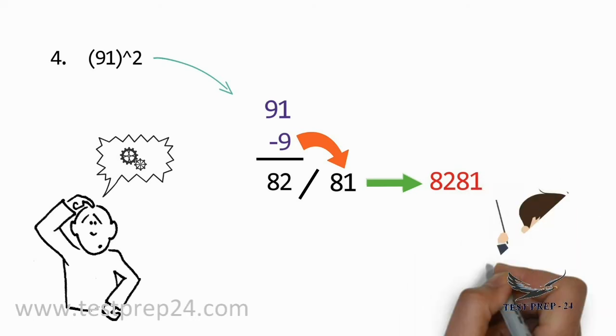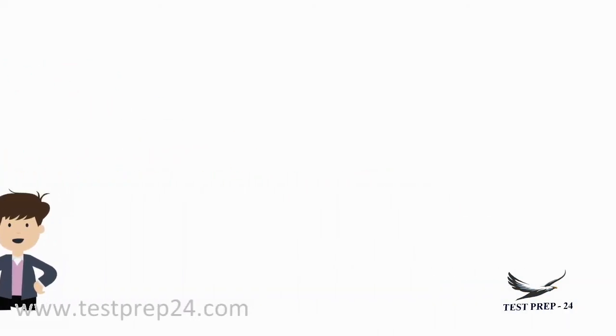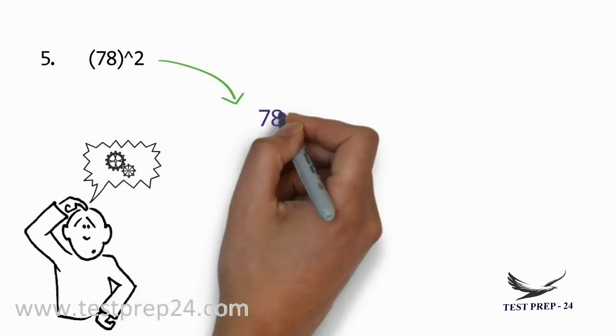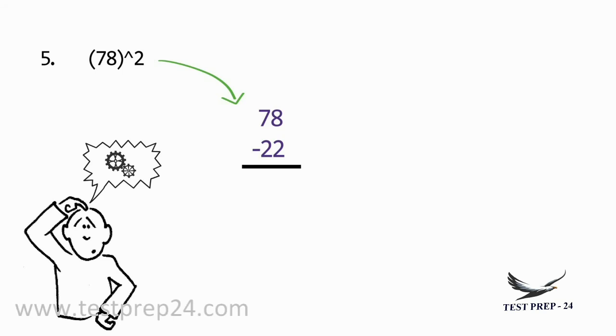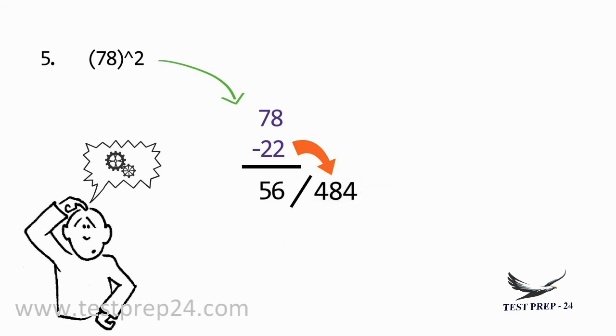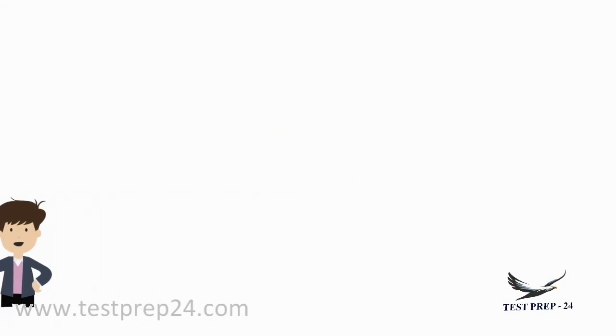Another example: 78 whole square. This 78 is 22 less than 100. So 78 minus 22 equals 56. The value of 22 whole square is 484. Since there are three digits in the second part, add the first digit to your previous part. 56 plus 4 equals 60, so your final answer will be 6084.